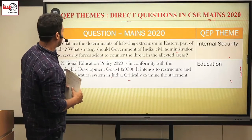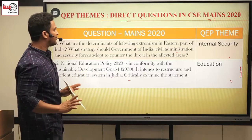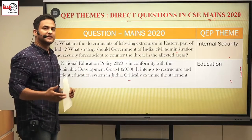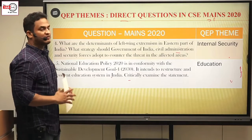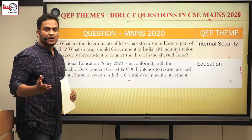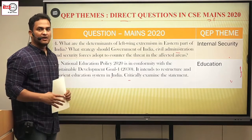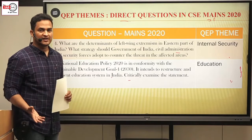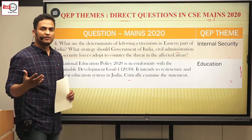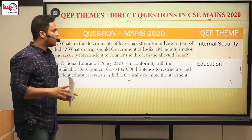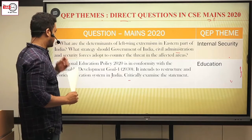The determinants of left-wing extremism were also given in the notes. For example, the tri-junction geography itself is one determinant. Then there is prevalence of poverty, and the green revolution could not reach that region, so even food security is a problem. All these things were discussed in QEP itself.